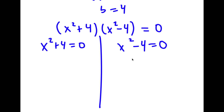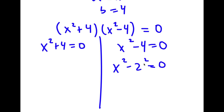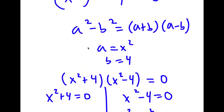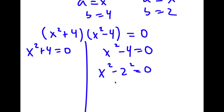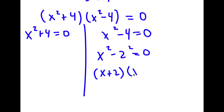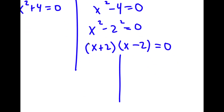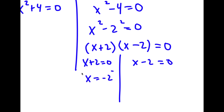For x squared minus 4 equals 0, I'm going to write 4 as 2 squared. So now I have x squared minus 2 squared equals 0. Using the difference of squares formula where a equals x and b equals 2, I have (x plus 2) times (x minus 2) equals 0. This gives me x plus 2 equals 0 and x minus 2 equals 0, so x equals negative 2 and x equals positive 2. These are two solutions.